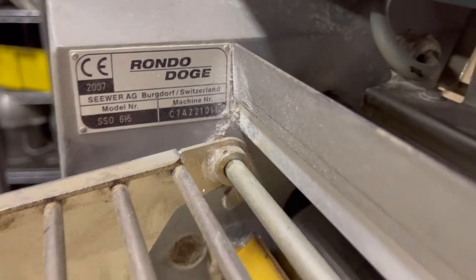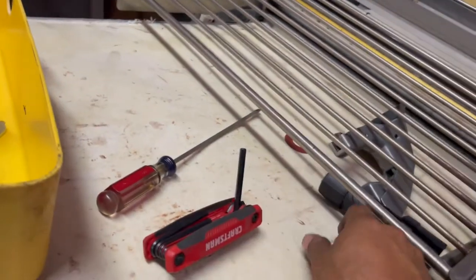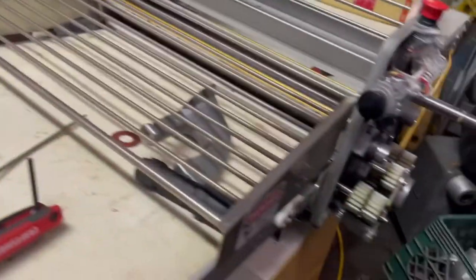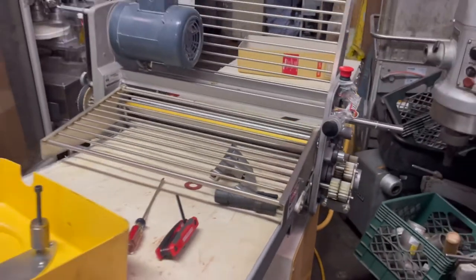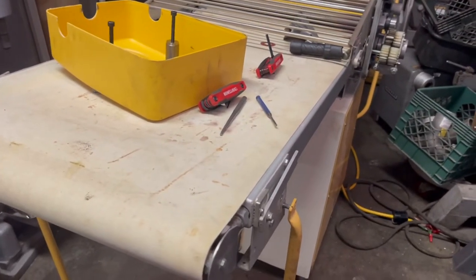So again, the cover has two bolts from the inside. Just like that, first time opening a Rondo Dough Sheeter has taken me 20 to 25 minutes to figure it out, and I'm already seeing the problems.